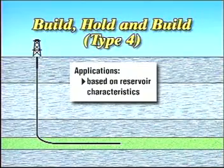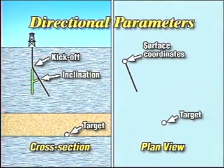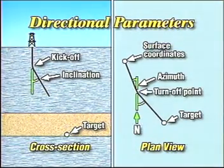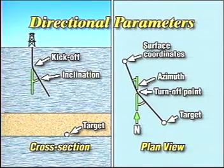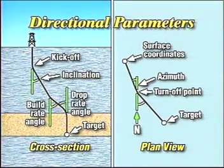We can define well profiles in terms of several key parameters. The inclination angle is the deflection from vertical at a given point, while the kickoff point is the depth at which we first begin building the inclination angle. The azimuth refers to the angle in the horizontal plane with respect to true north. The turnoff point is the depth at which we change azimuth. The turn rate angle represents the incremental change in azimuth over a measured course length, while the build rate angle refers to the incremental increase in inclination. Conversely, the drop rate angle on a build, hold, and drop pattern is the incremental decrease in hole inclination.